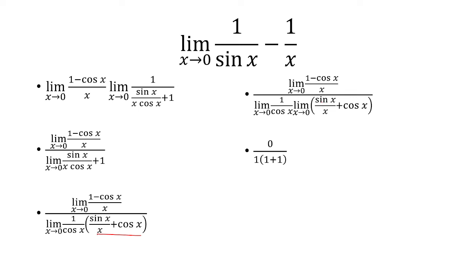Regardless, that one is 0. 1 over cosine of x goes to 1, and so does cosine of x. So we have 0 over 1 times 1 plus 1, which is just 0. And that is our answer.